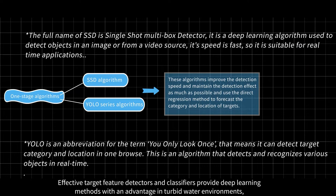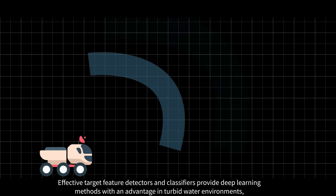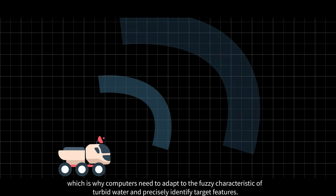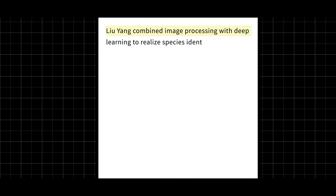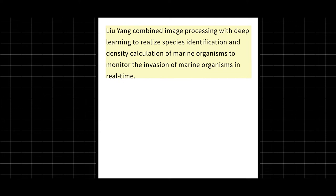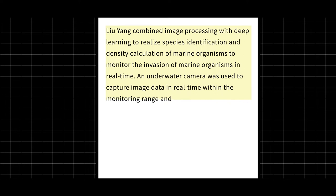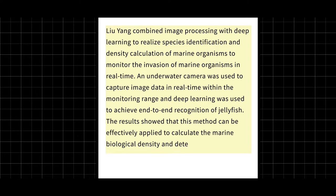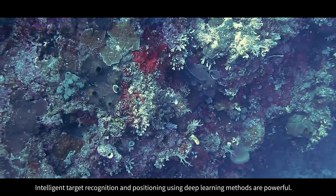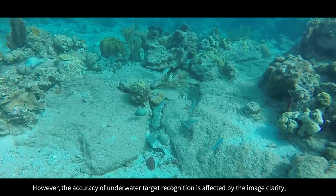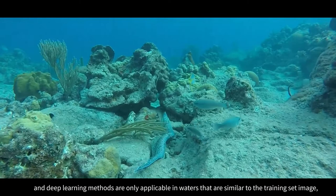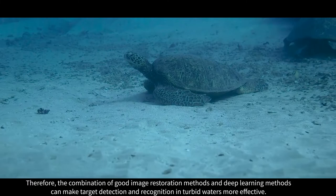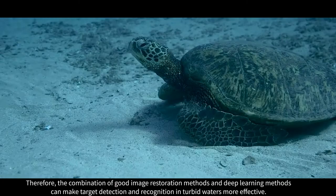Effective target feature detectors and classifiers provide deep learning methods with an advantage in turbid water environments, which is why computers need to adapt to the fuzzy characteristics of turbid water and precisely identify target features. Lu Yang combined image processing with deep learning to realize species identification and density calculation of marine organisms to monitor the invasion of marine organisms in real-time. An underwater camera was used to capture image data in real-time, and deep learning was used to achieve end-to-end recognition of jellyfish. The results showed this method can be effectively applied to calculate marine biological density and detect marine biological species. However, the accuracy of underwater target recognition is affected by image clarity, and deep learning methods are only applicable in waters similar to the training set images, so this method has some limitations. Therefore, the combination of good image restoration methods and deep learning can make target detection in turbid waters more effective.